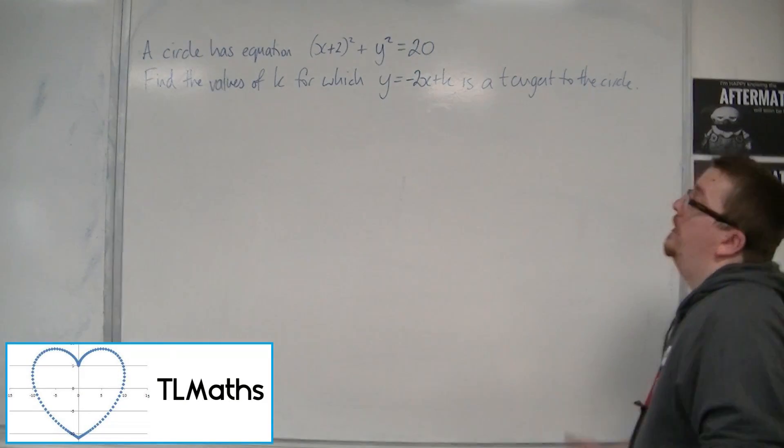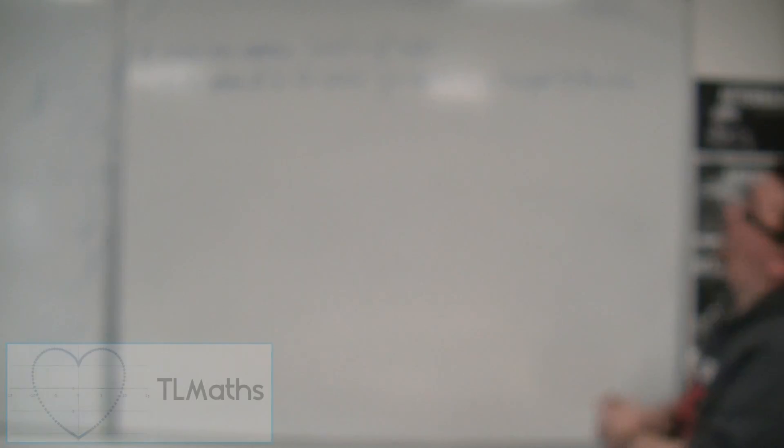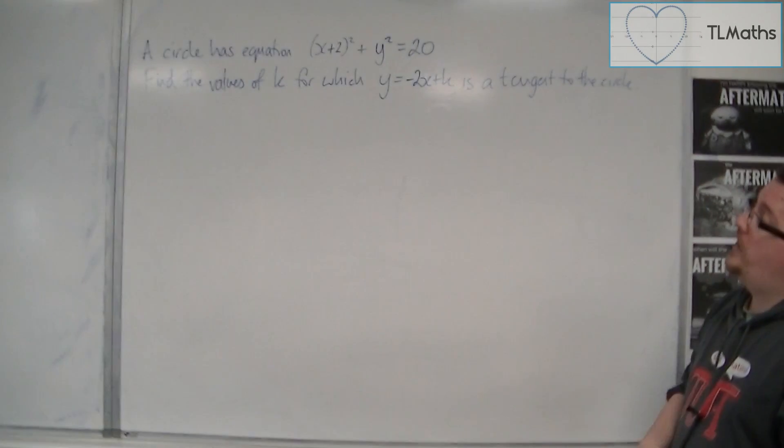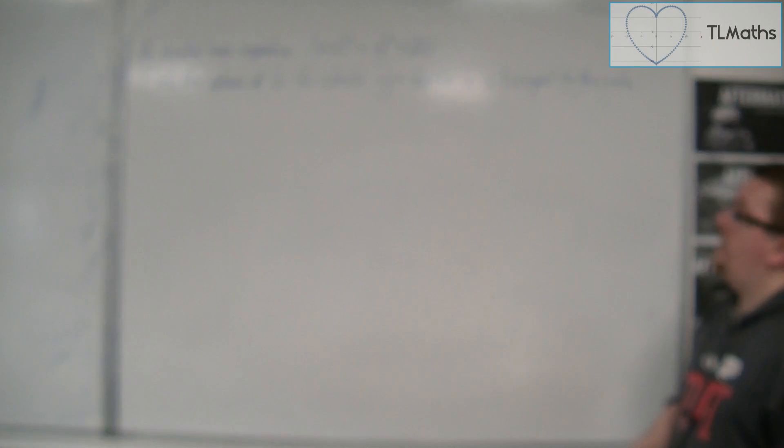Okay, so let's go through this example. A circle has the equation (x+2)² + y² = 20. Find the values of k for which y = -2x + k is a tangent to the circle.